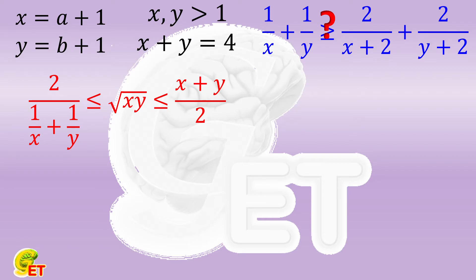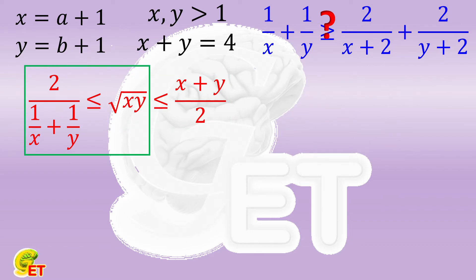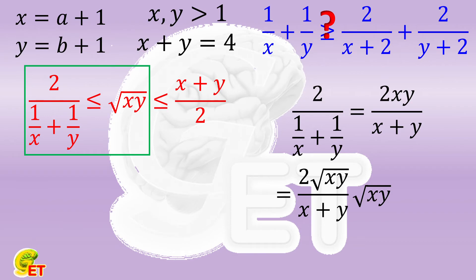Let's first recall the proof process of the latter part: the geometric mean is not bigger than the arithmetic mean. We calculate x plus y minus twice the square root of x times y — it is actually the square of the difference between the square root of x and the square root of y, so it cannot be smaller than zero. Then for the former part, the harmonic mean can be written as twice x times y over x plus y, which is the ratio of their geometric mean to the arithmetic mean multiplied by the geometric mean again. We have just proved that this ratio cannot be bigger than one, so the result cannot be bigger than the geometric mean.